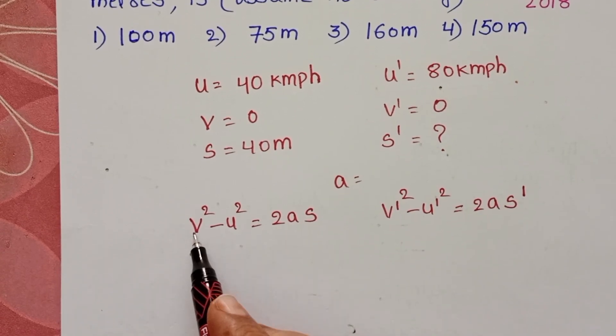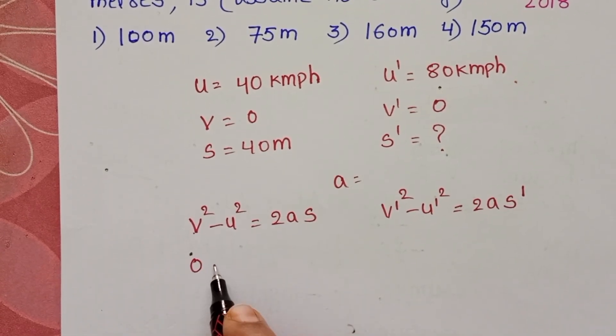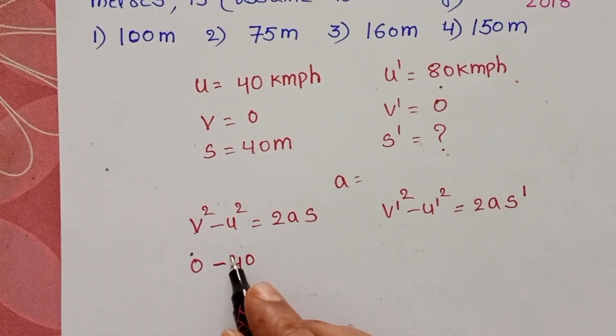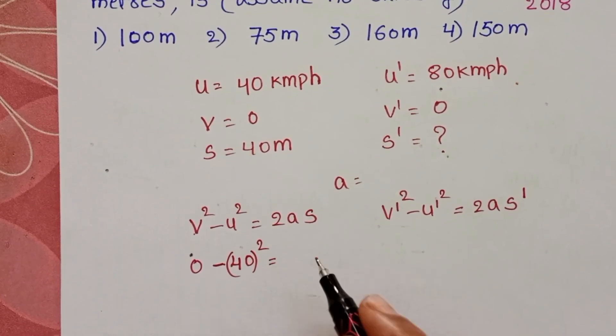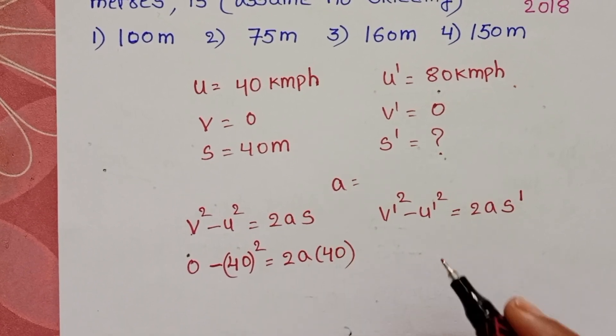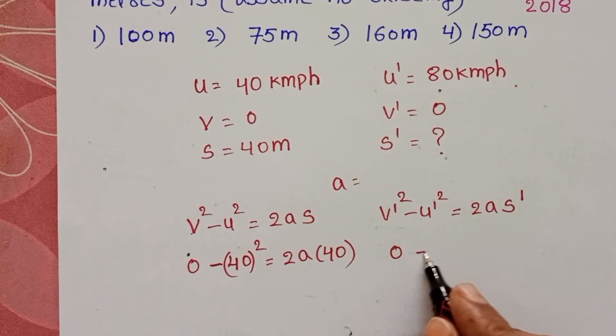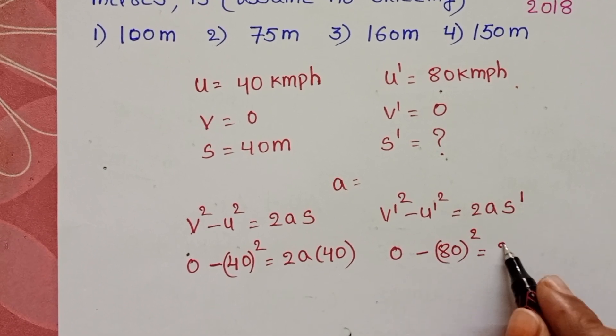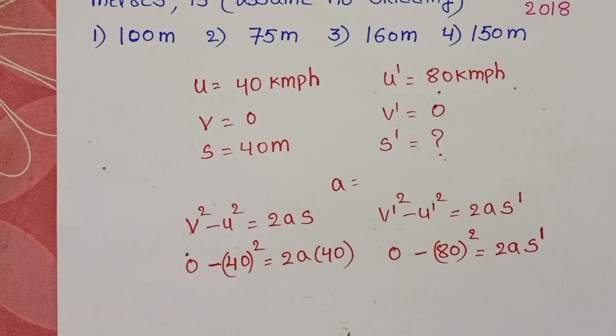For the first case, final velocity is 0, initial velocity is 40 km/h, and the distance s is 40 meters. For the second case, final velocity is 0, initial velocity is 80 km/h, and we need to find the distance s'.